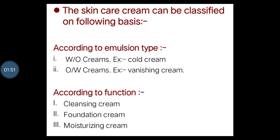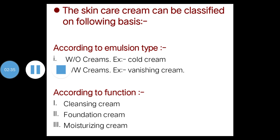The classification of cream: skin care creams can be classified into two types — first, according to the emulsion type, and second, according to the function type. According to emulsion type, creams are classified into W/O creams, that is water-in-oil creams (example: cold cream), and O/W creams, that is oil-in-water creams (example: vanishing cream).